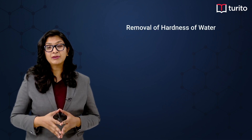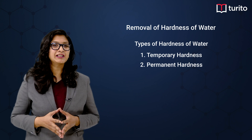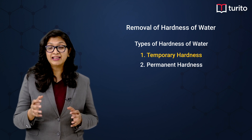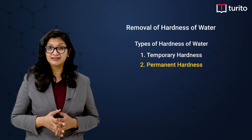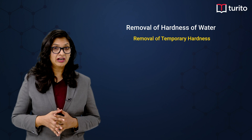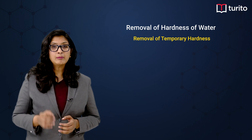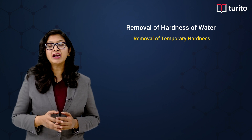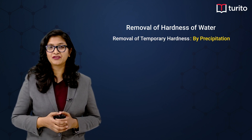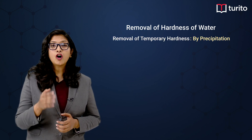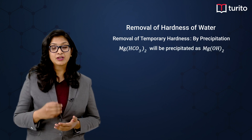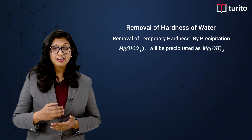First of all, remember that there are two different types of hardness: temporary hardness and permanent hardness. Temporary hardness is removed by precipitation reaction. All the magnesium bicarbonate present in it will be converted into magnesium hydroxide.